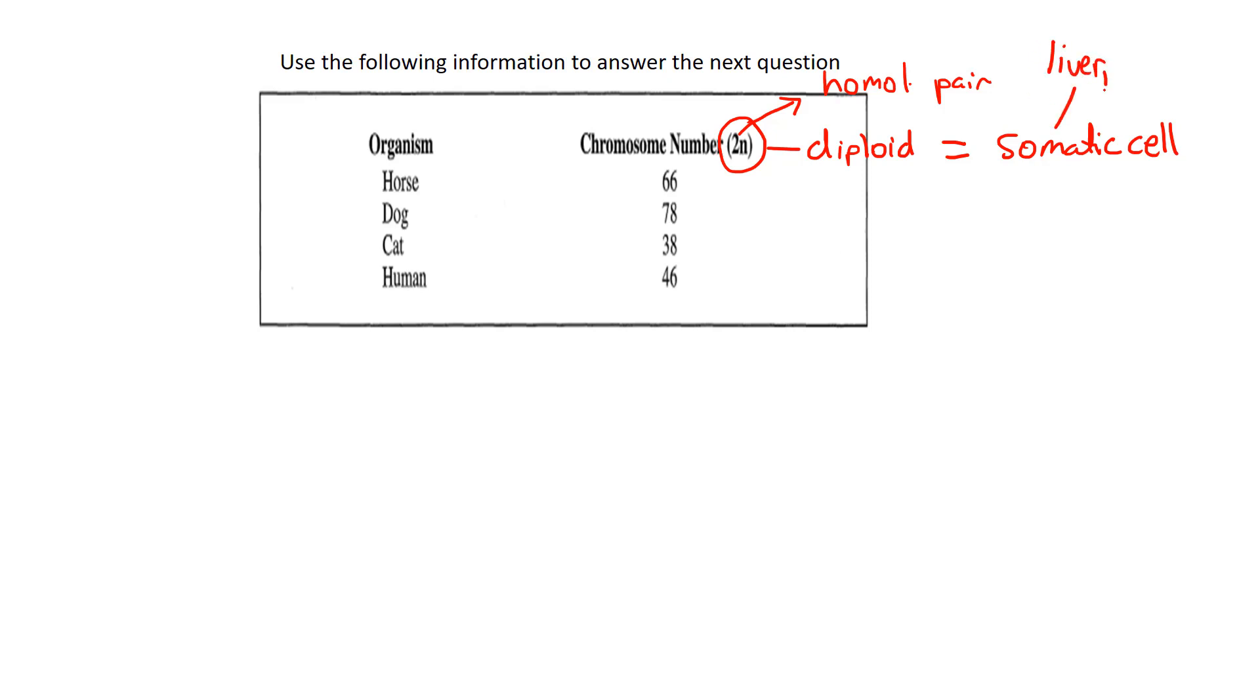So let's put some examples: liver, skin, stomach—all those cells will contain that chromosomal number indicated in this column here. A horse has 66 chromosomes in his somatic cells, dog 78, cat 38, and human 46.